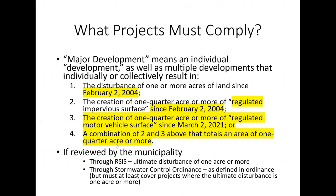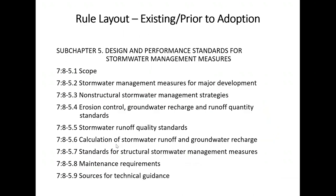Looking at the layout of the existing rules, which remain in effect until March of next year — Subchapter 5 is the focus, containing the design and performance standards for stormwater. The current layout has 5.1 scope, 5.2 stormwater management measures for major development, 5.3 non-structural strategies, 5.4 erosion control/groundwater recharge/runoff quantity, 5.5 quality standards, 5.6 calculations, 5.7 structural stormwater management measures standards, 5.8 maintenance, and 5.9 technical guidance sources.